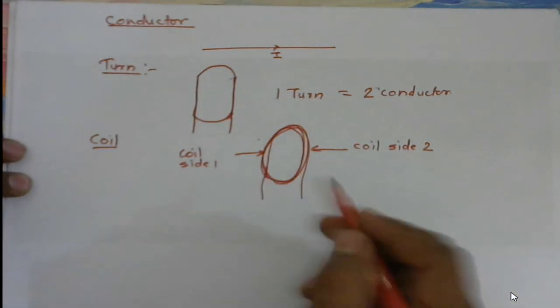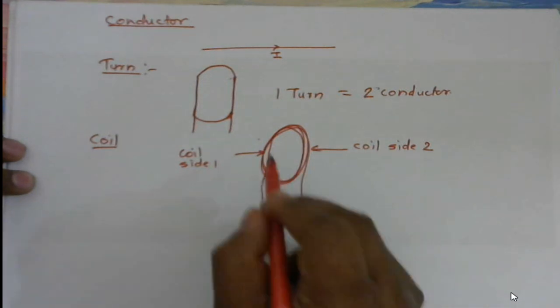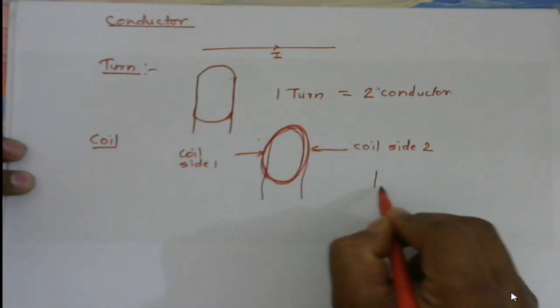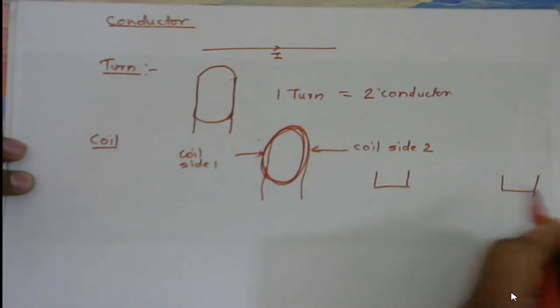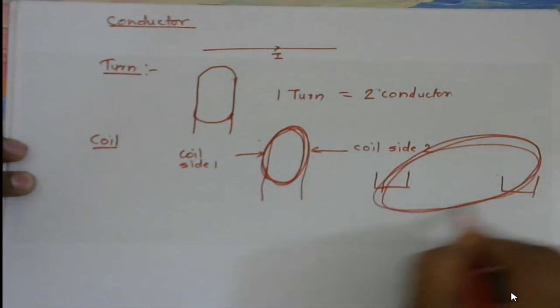Suppose we have to place this coil in a slot. So how much slot do we require for one coil? We require at least two slots. So these are the two slots. So to place this coil, we require two slots.